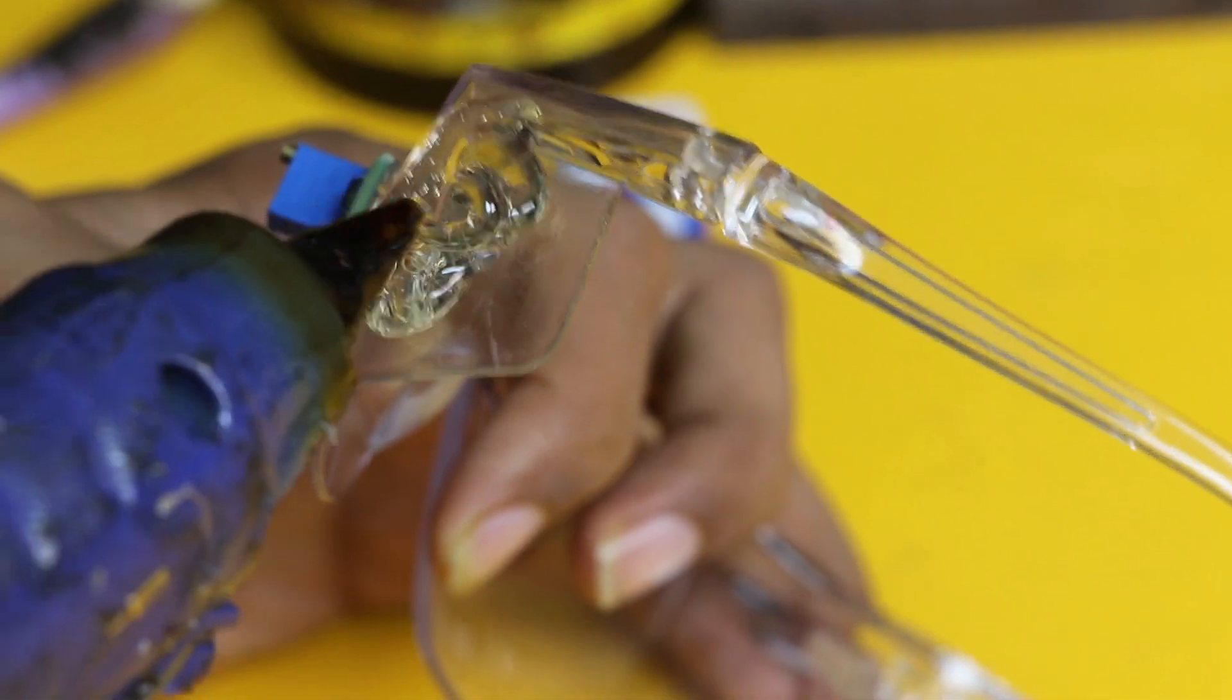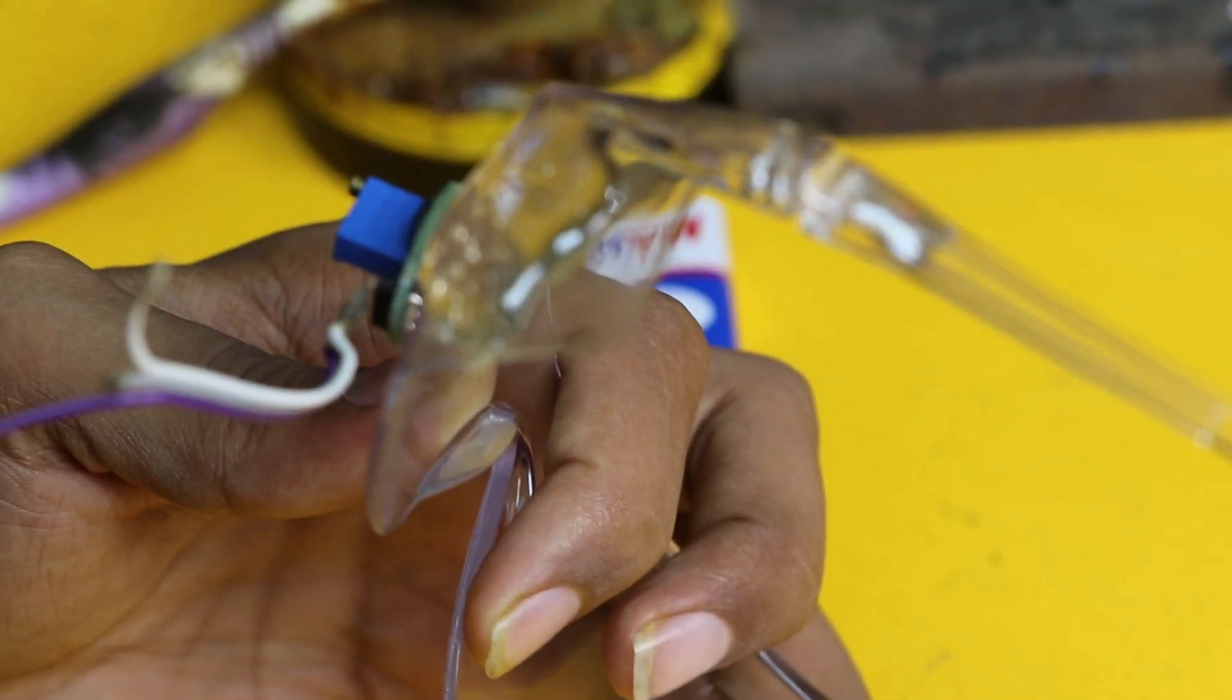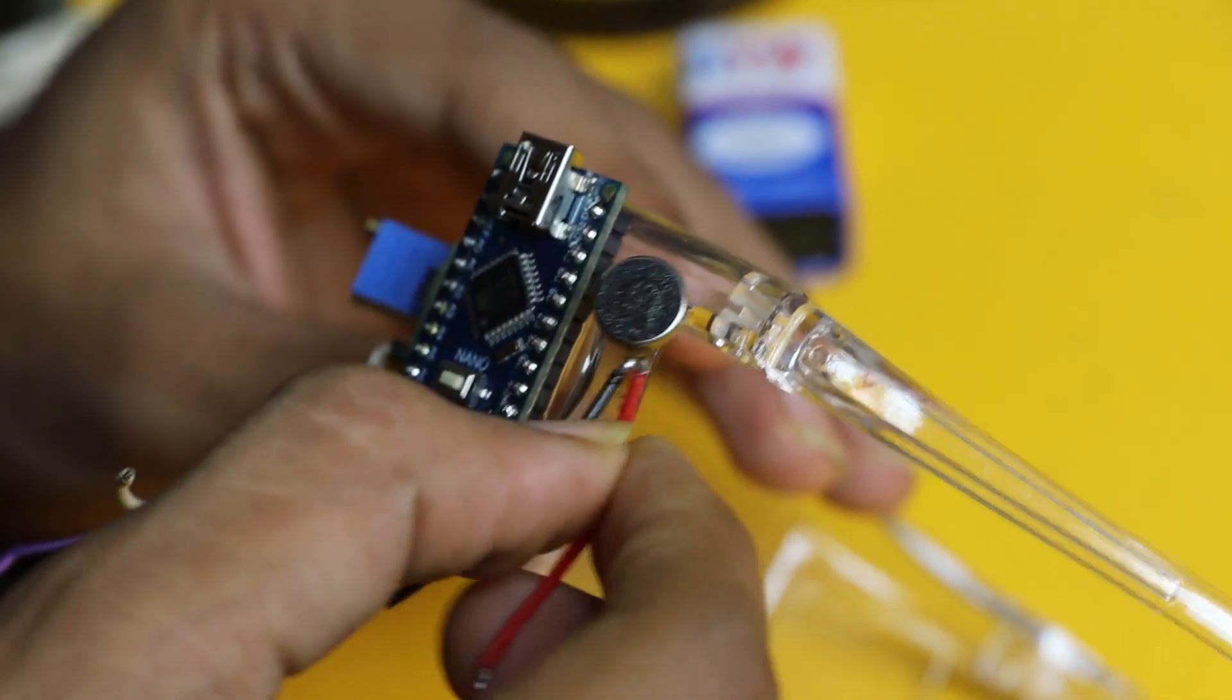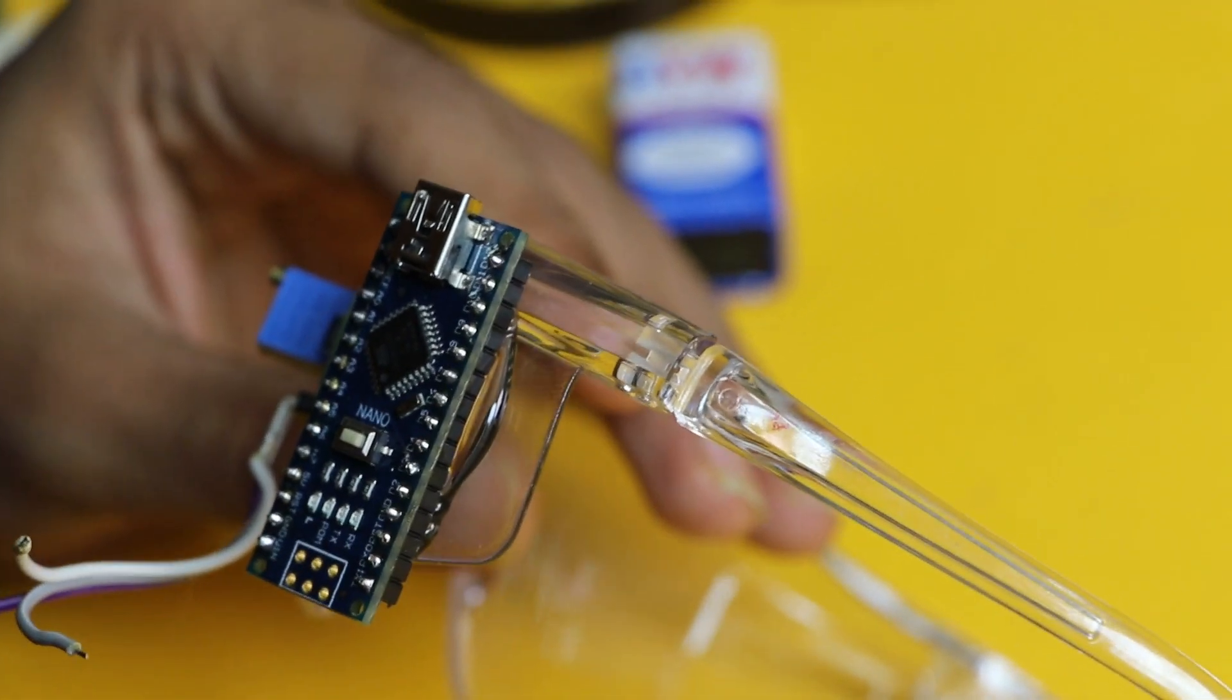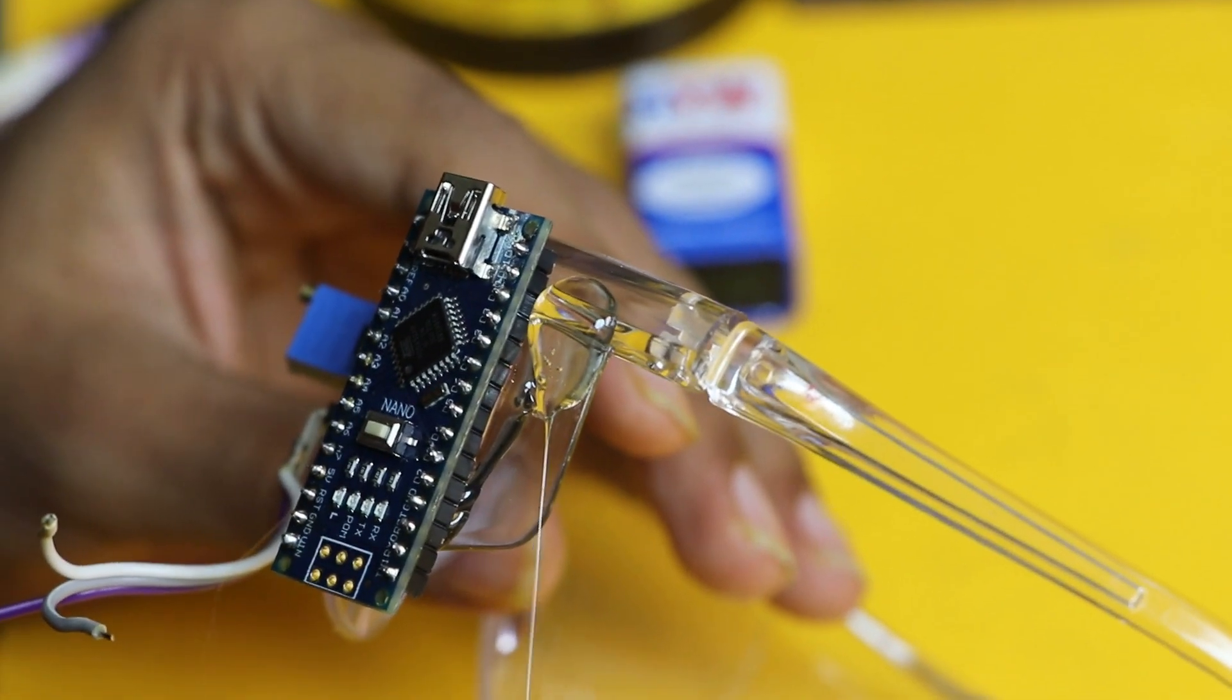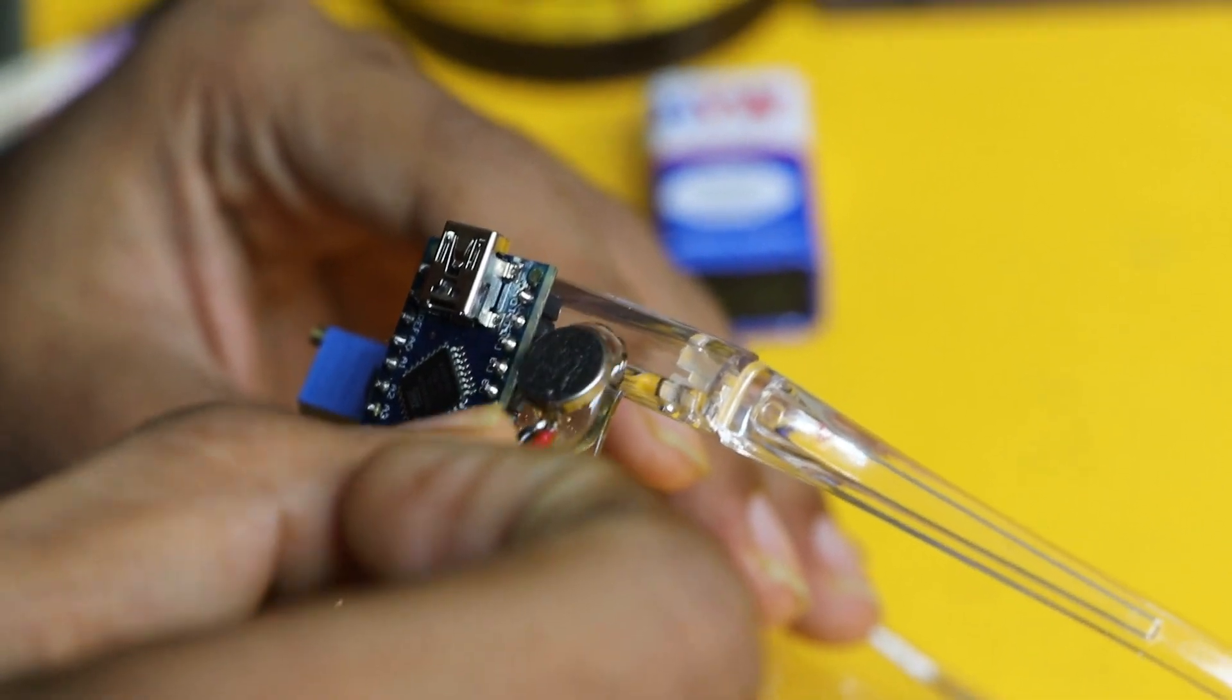Now we are going to glue the components on the goggle using the heat gun. This is the Arduino Nano. First, we are going to stick the Arduino Nano on the side of the goggle. You can program it before sticking it to the goggle or later, because the USB port is in open space.